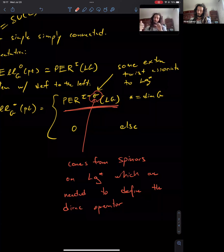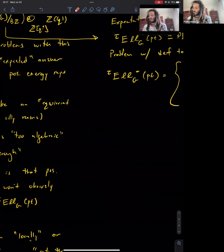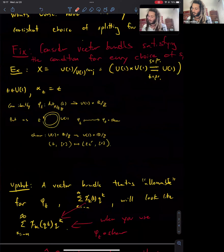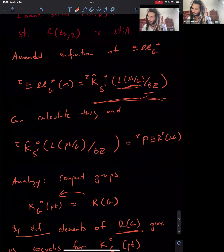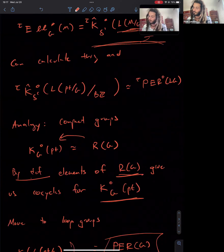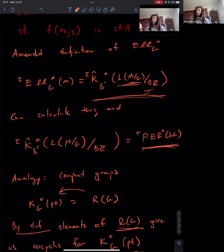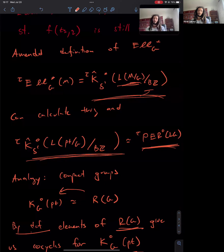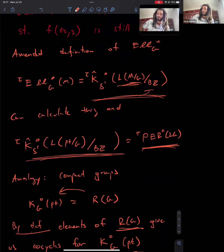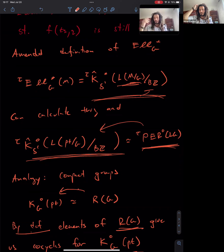The price you pay is this shift. But if you change the definition of K-theory to this completed version, positive energy representations—although infinite dimensional—satisfy the conditions needed to define a vector bundle: they have finite-dimensional S1-eigenspaces. So you get a natural map from representations to K-theory classes, just like in the compact case, and you have a chance to prove it's an isomorphism. And it turns out to be.